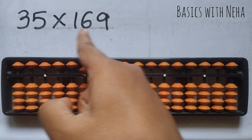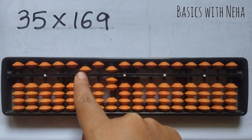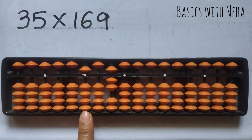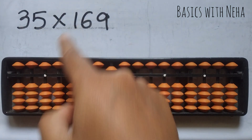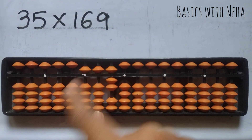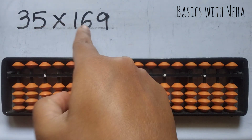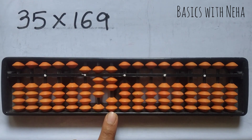Now do 5 into 169, which is 4 numbers. Start from the 4th rod from the house pointer 1s rod. 5 ones are 5, so it will be 0, 5. 5 sixes are 30 — 3, 0, 30.